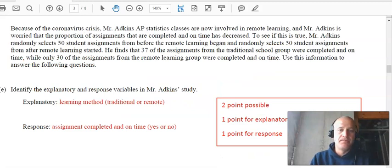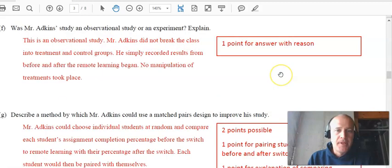All right, fifth question. Mr. Atkins' classes are now involved in remote learning, and he's worried that the proportion of assignments that are completed on time have decreased. So he's going to do an experiment. Our explanatory is going to be the learning method, traditional versus remote, and we're seeing if that has an effect on the assignment completed and on time.